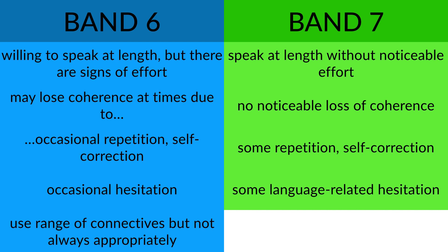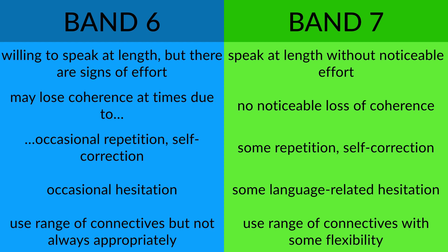There may be some hesitation at band 7 — a candidate may be trying to think of some language to include — but that's OK. You can hesitate a little when searching for vocabulary. Generally at band 7, speech is more natural, smoother, and more fluent because you're not constantly searching for words and phrases. Having a wide vocabulary will help you reach band 7 or above for not just fluency and coherence but also lexical resource. Band 7 candidates will also use discourse markers, connectives, and cohesive devices both accurately and with some flexibility.